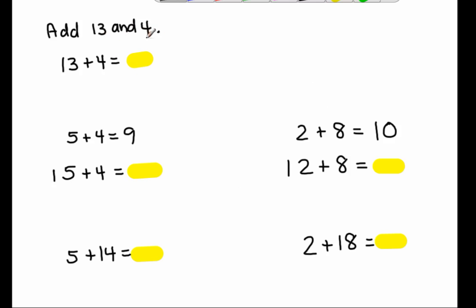It says add 13 and 4. So if I add 13 and 4, I'm looking at 13 and 4 and I'm noticing that there is one 10 and three ones. Next step is to add up your ones. So three plus four equals seven. And then 10 and seven make 17. So 13 plus four equals 17.